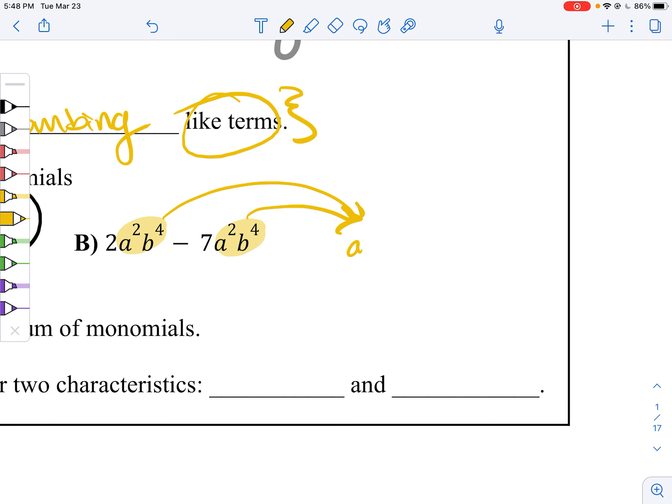It's got an a squared b to the fourth power. And what did we leave behind? We left behind a 2 minus 7. 2 minus 7 is negative 5. So it's negative 5 a squared b to the fourth power.